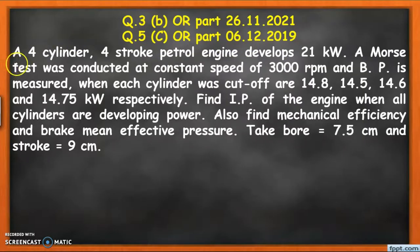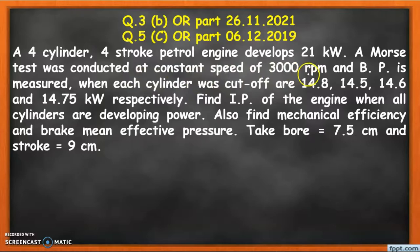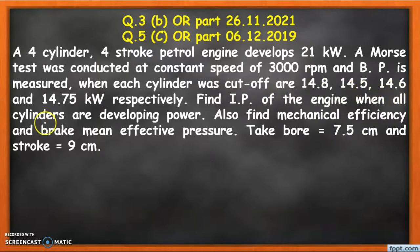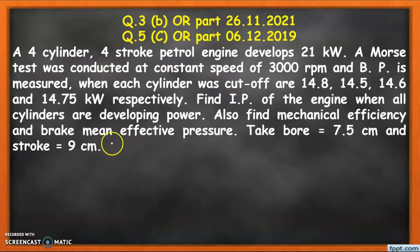The data given for this numerical: a four-cylinder four-stroke petrol engine develops 21 kilowatt. A Mohr's test was conducted at constant speed of 3000 rpm, and the brake power measured when each cylinder was cut off is 14.8, 14.5, 14.6, and 14.75 kilowatt respectively. Find the indicated power when all cylinders are developing power, also find the mechanical efficiency and brake mean effective pressure. Take bore as 7.5 cm and stroke length as 9 cm.